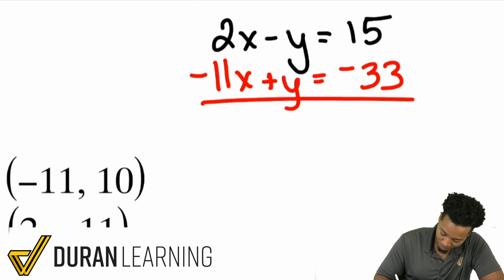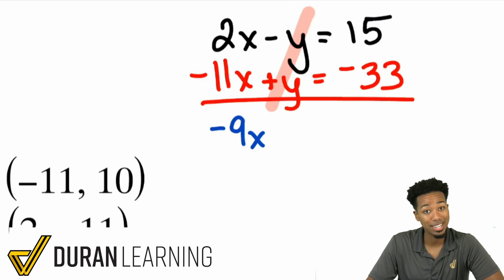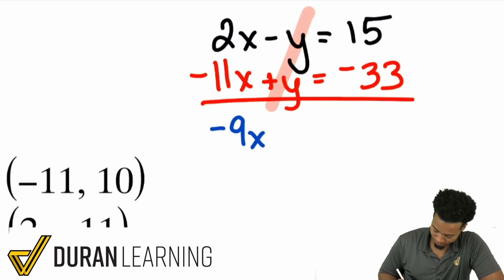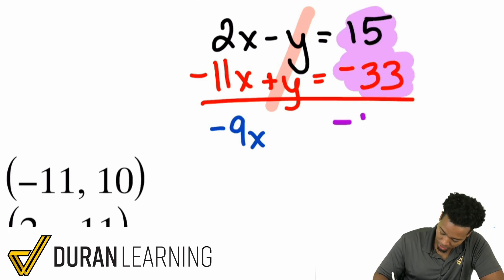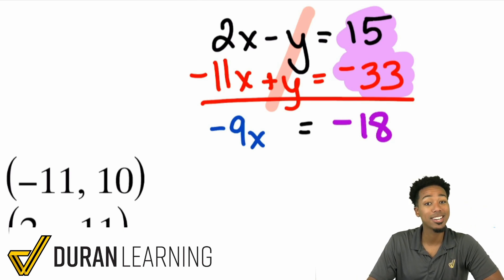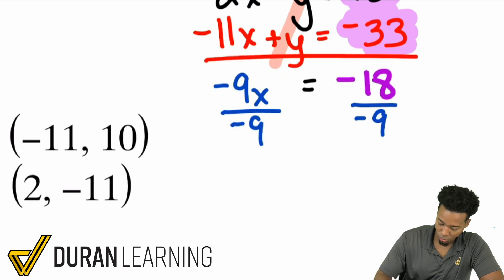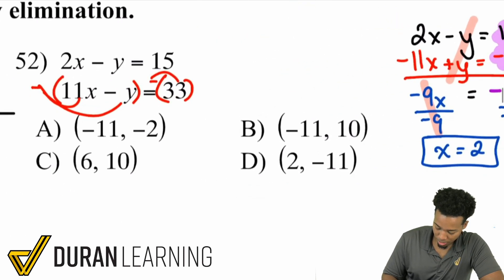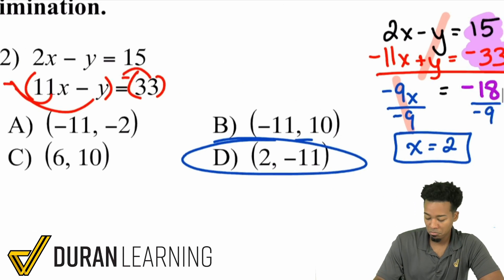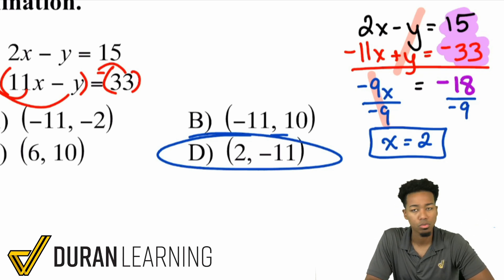So here we go: 2x minus 11x gives negative 9x; negative y plus y eliminates; and 15 minus 33 gives negative 18. So negative 9x equals negative 18. Divide both sides by negative 9, and we get x equals positive 2. Answer D is the only one where x equals positive 2, so we're done. If you wanted to solve for y, you'd plug x back into the equation and solve.